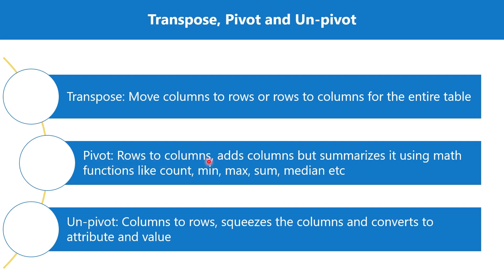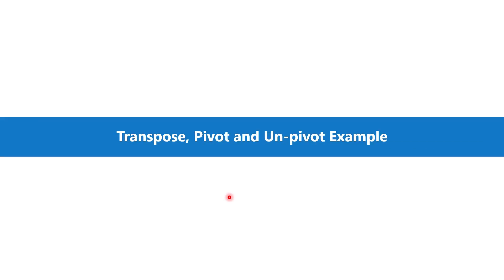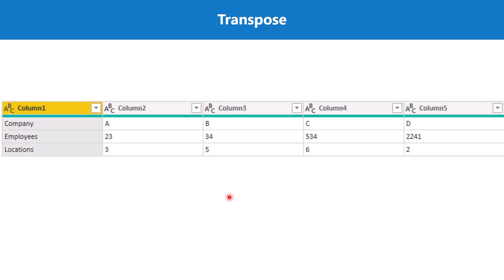The second transformation is pivot, where rows are moved to the columns. This transformation adds columns but summarizes them using mathematical functions like count, min, max, sum, median, etc. The third transformation is unpivot, which is the opposite of pivot — it converts columns to rows, squeezing the number of columns into an attribute and a value column.